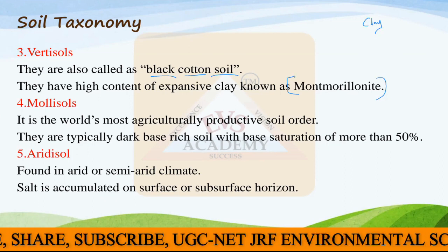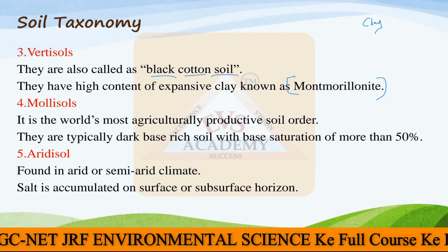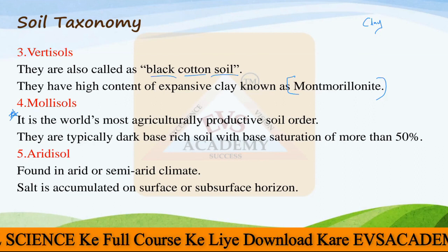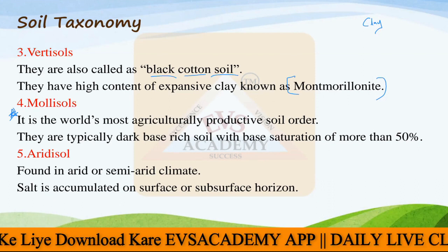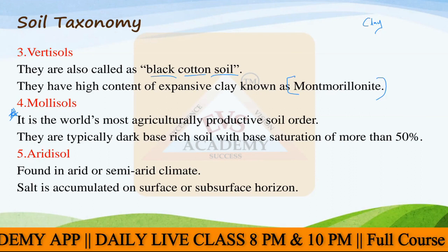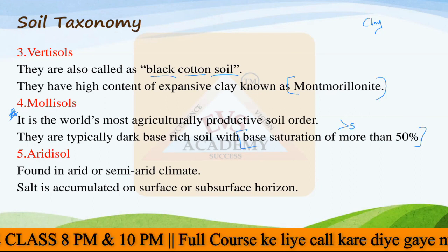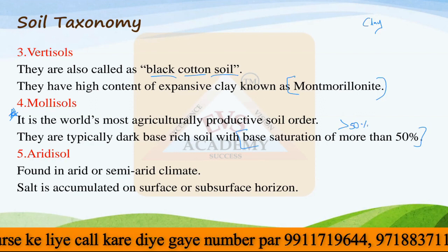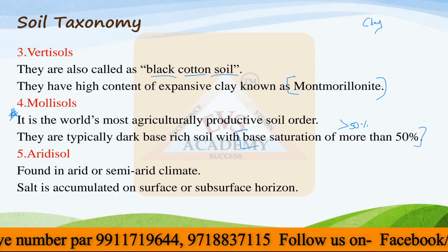Then we have the Mollisols. Mollisols are the world's most agriculturally productive soil order - the most fertile type of soil order. They are typically dark base-rich soil with base saturation of more than 50%. This is important: base saturation should be more than 50% to be categorized under Mollisols. If base saturation is less than 50%, then that cannot be termed as a Mollisol order of soil.